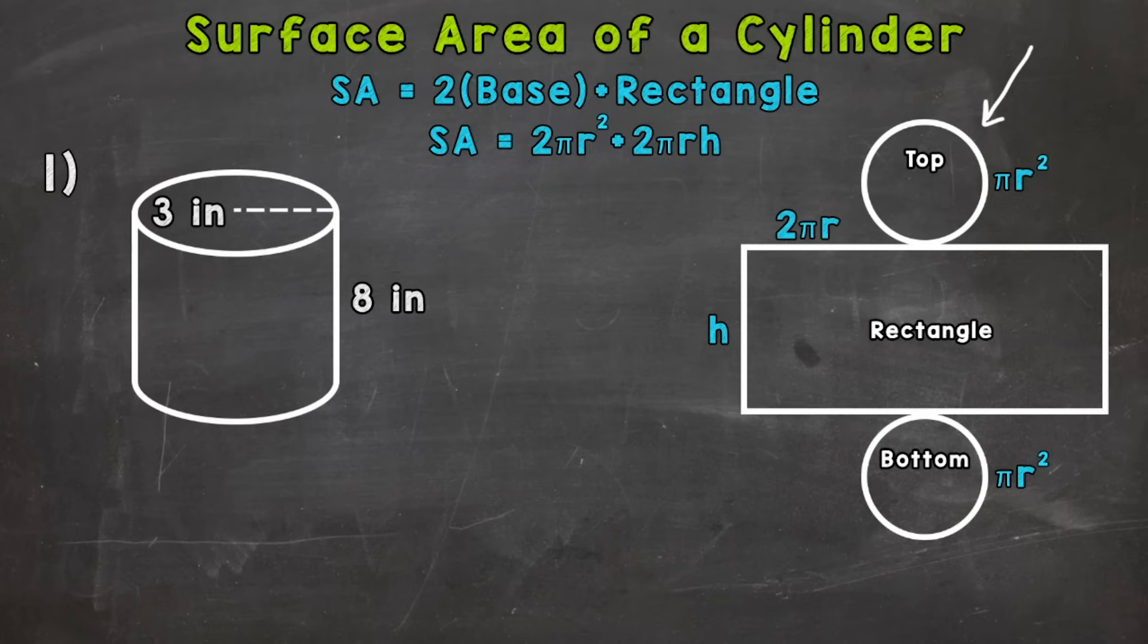So at the top of your screen, we have the formula that we're going to use. The bottom formula here, I'll underline it. This is the official formula that we're going to use in order to find the surface area. But the top one kind of breaks it down and tells us exactly what we'll be doing. So the top one, surface area equals 2 times the area of the base plus the area of the rectangle. Now the one below it has the official formulas.